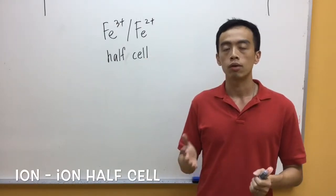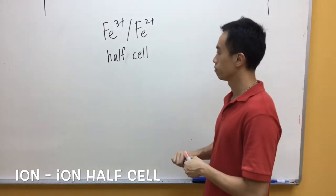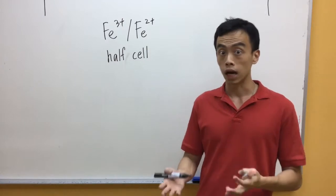Now the third type of half-cell, which is our ion-ion half-cell, is also pretty simple to draw. So we have our example of our iron-3-plus and iron-2-plus half-cell.